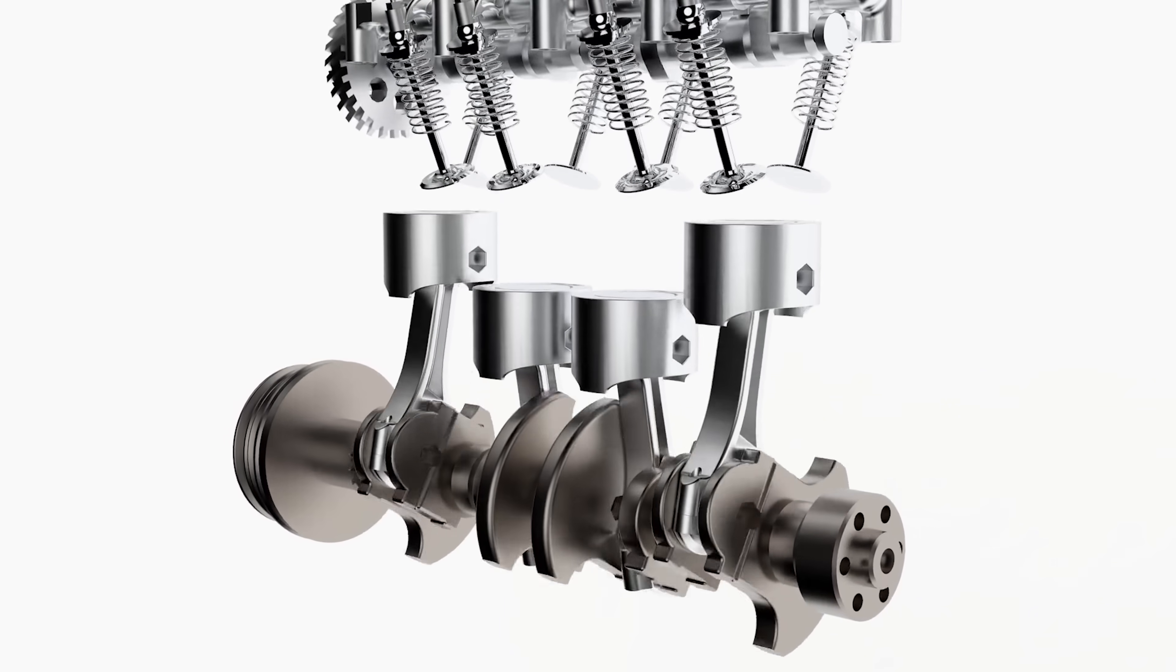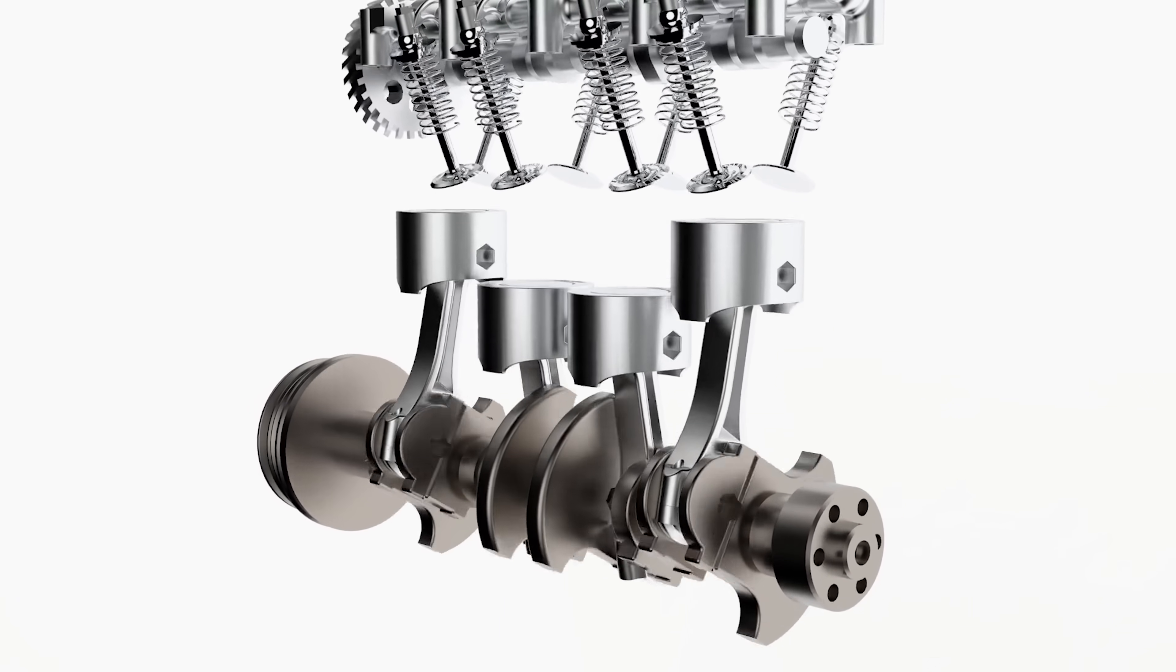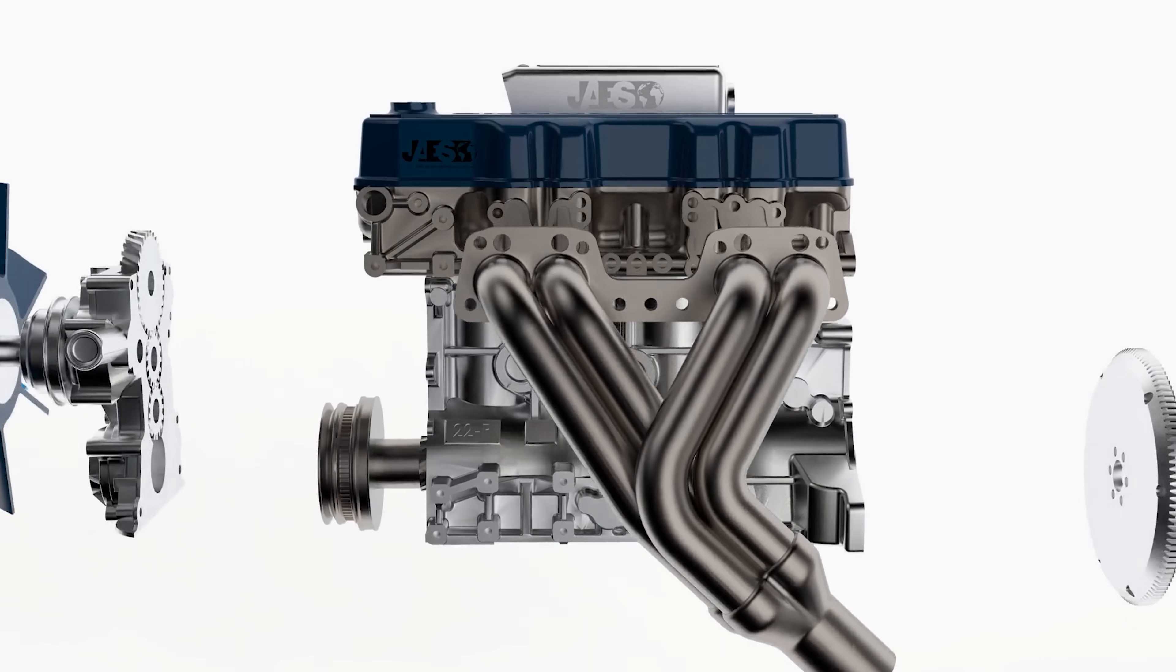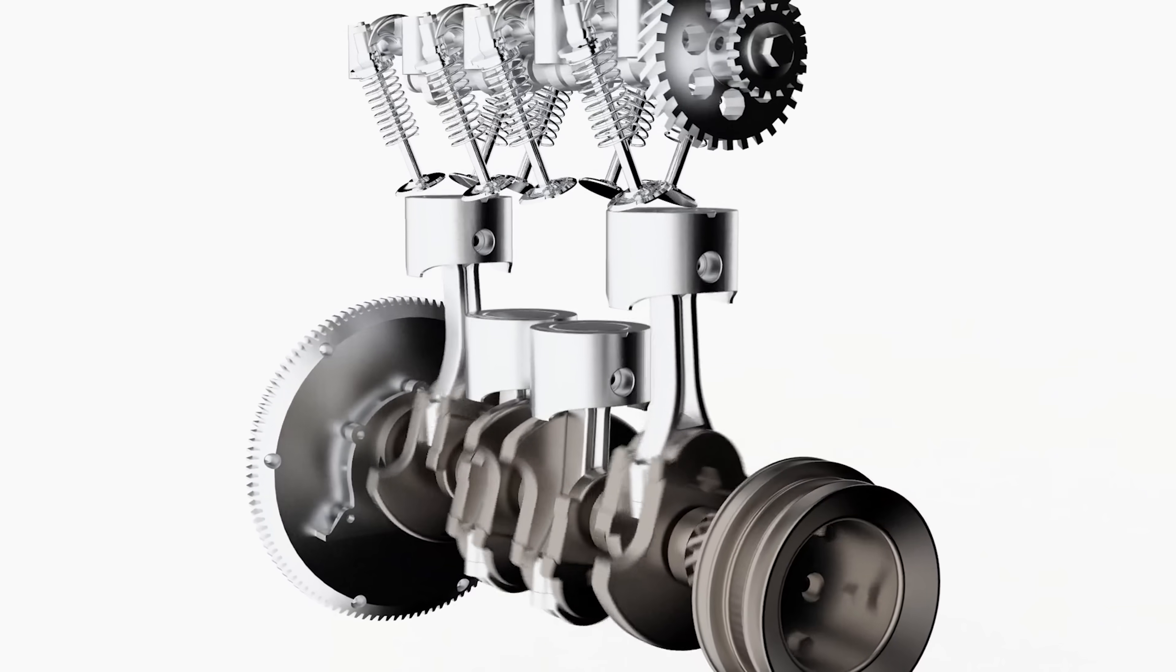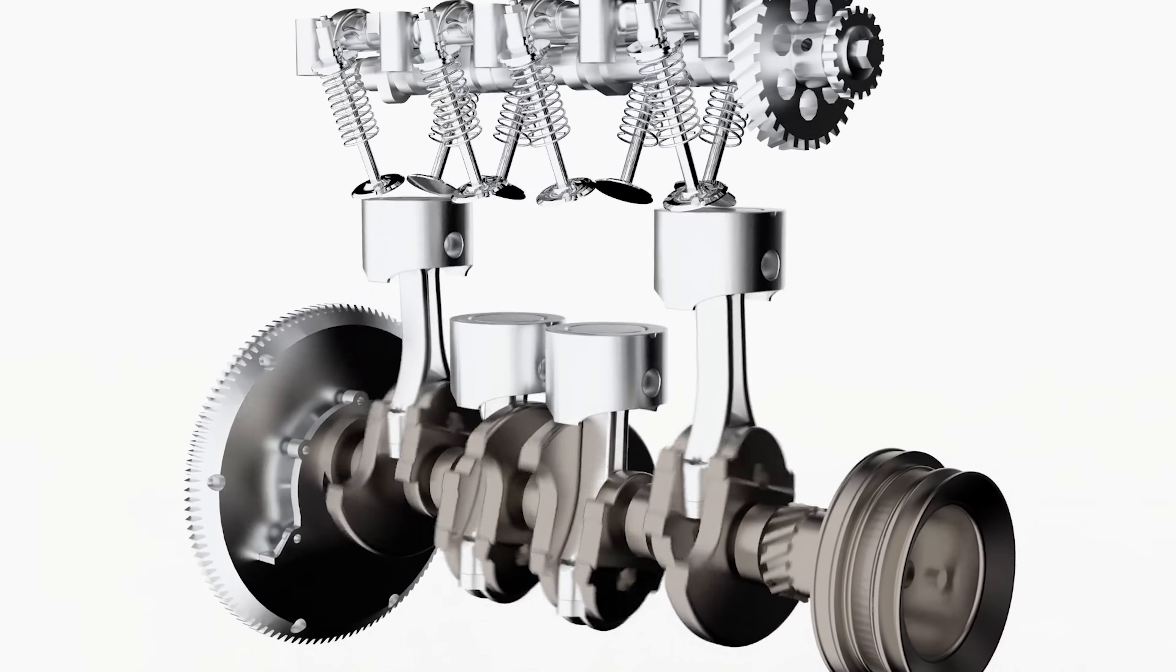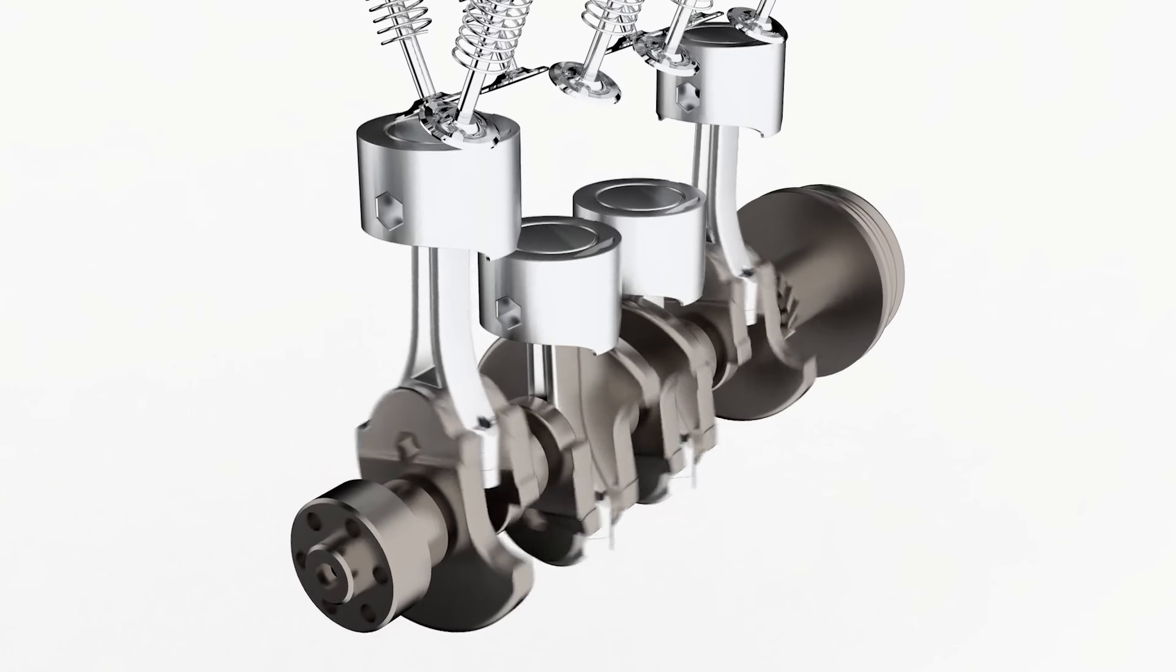So that the back and forth linear motion of the pistons is transformed into a circular motion which can power the wheels. But let's see this process more in detail by disassembling the engine.